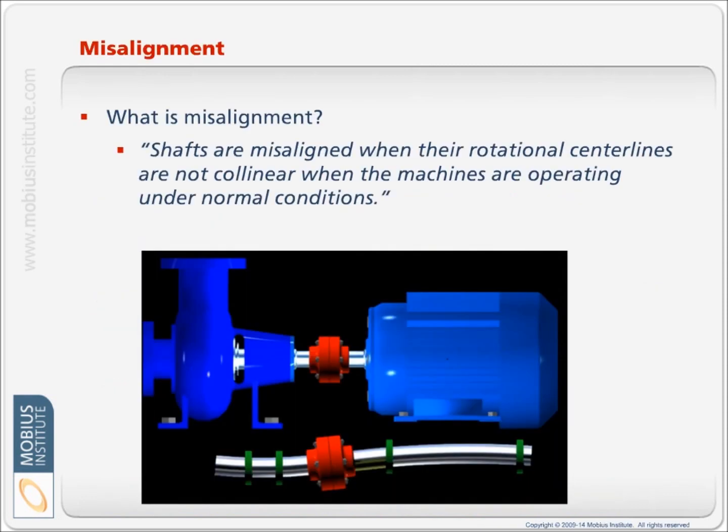First we have to quickly understand what misalignment is. Shafts are misaligned when their rotational centerlines are not collinear when the machines are operating under normal conditions.